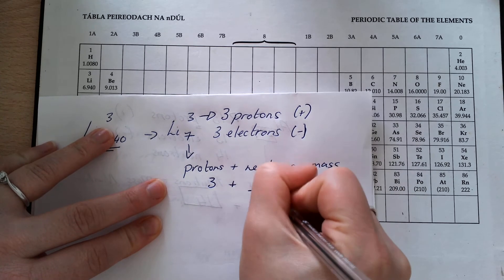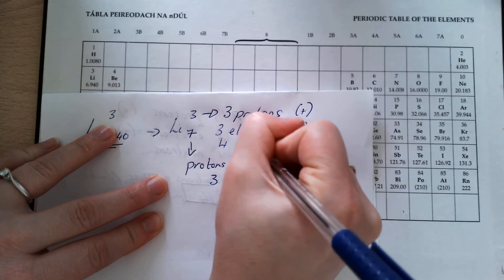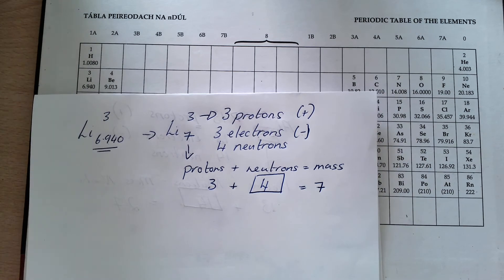So then 3 plus 4 equals 7. So lithium has 3 protons, 3 electrons, and 4 neutrons.